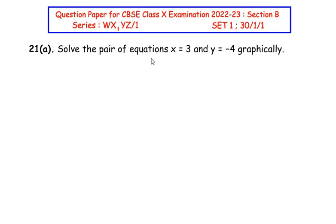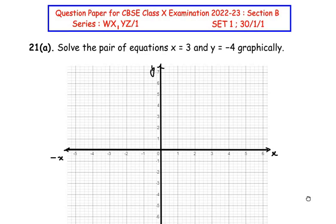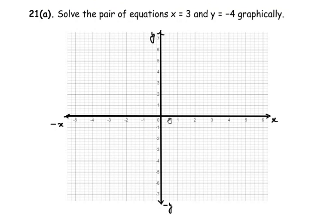Let us start with the first one: Solve the pair of equations x=3 and y=-4 graphically, which means we have to draw this given data on a graph. So let me draw a graph first. Here the graph is being considered where we have the x-axis and the y-axis.